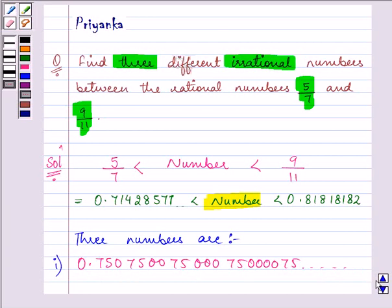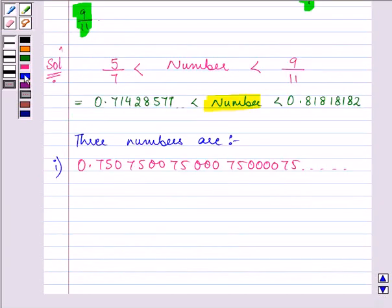Similarly, the other number which can be given can be 0.767076700760070076007 and so on. Right, and let us think of a third number.